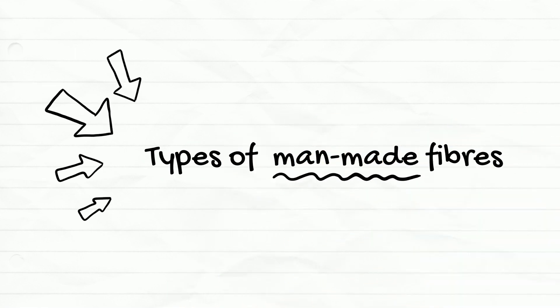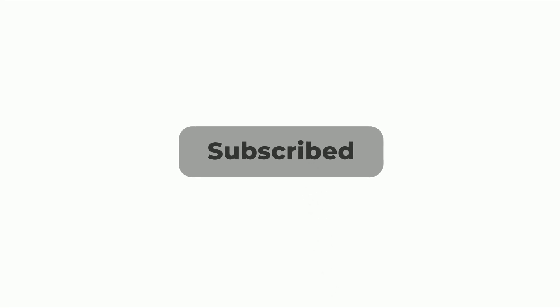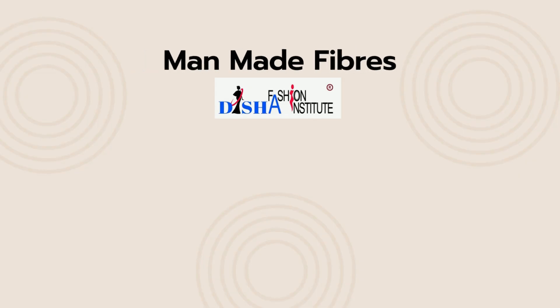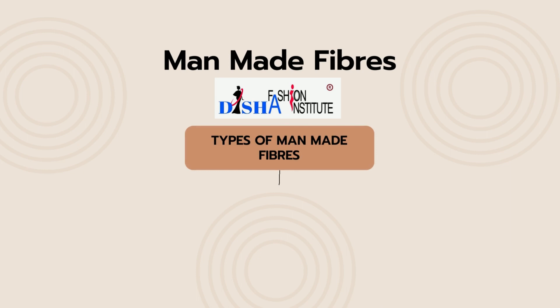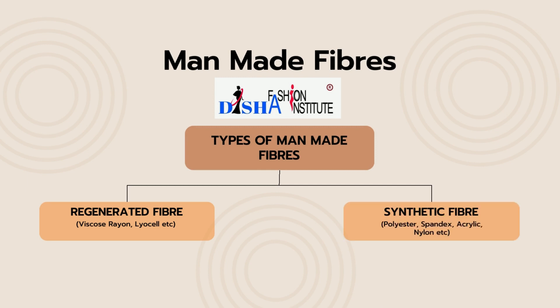Today we will learn about different types of man-made fibers. In the textile industry, man-made fibers can be divided into two main types. One is regenerated fibers, which are basically regenerated from natural materials. The other is synthetic fibers, which are entirely synthetic and not derived from natural sources.